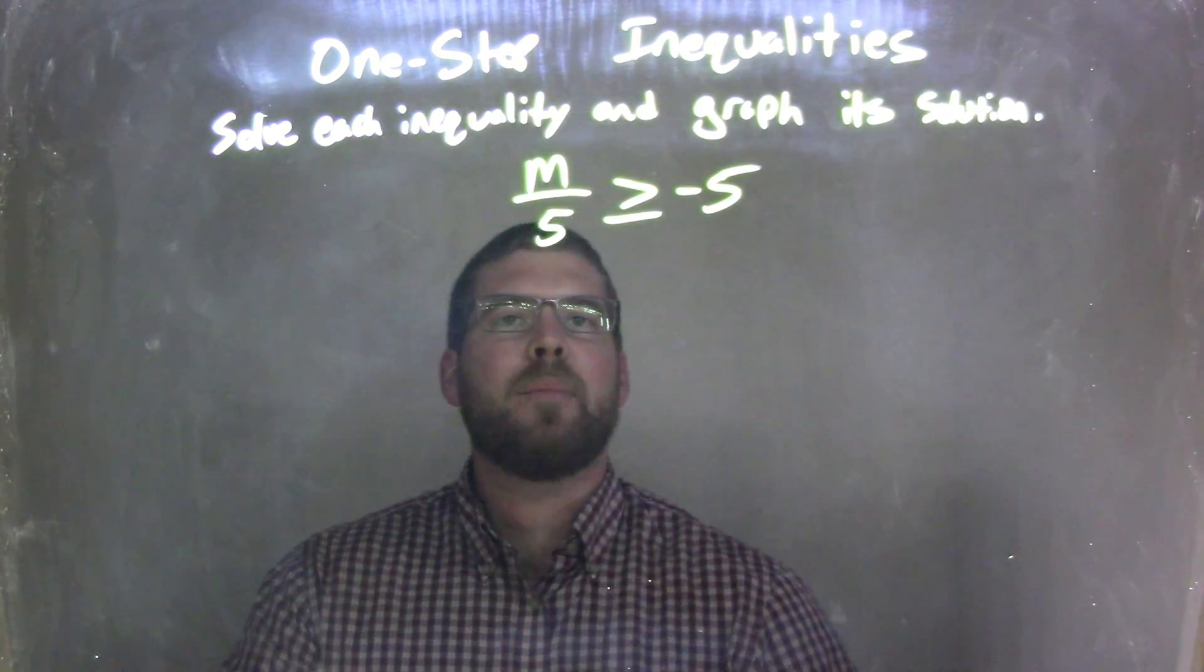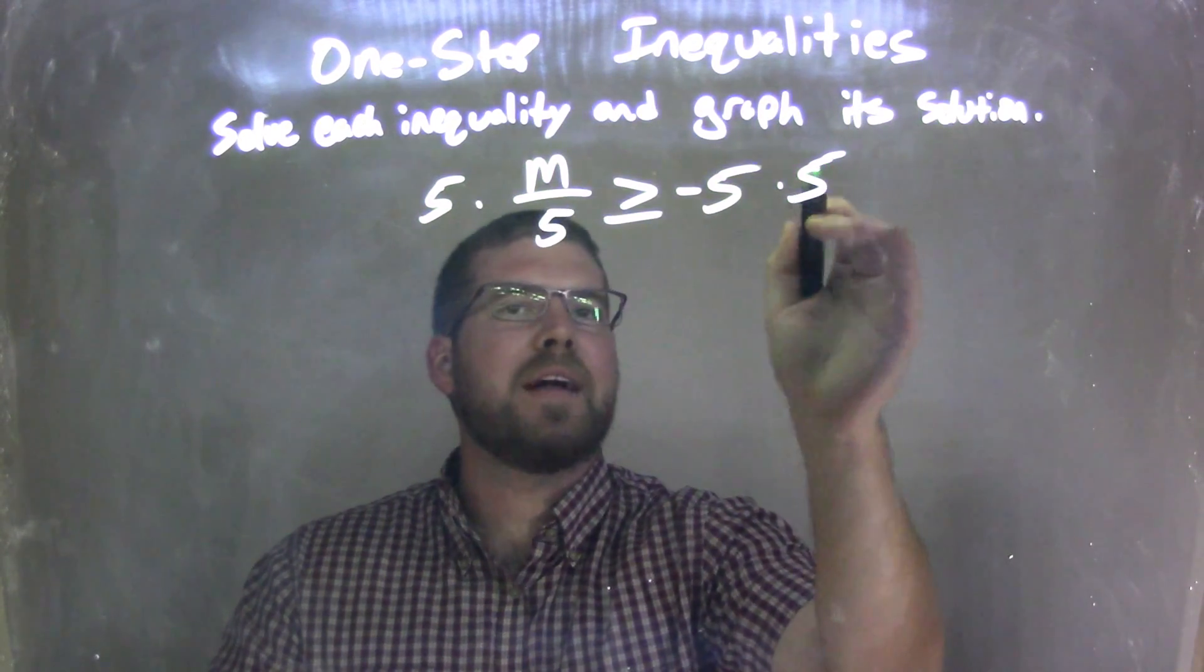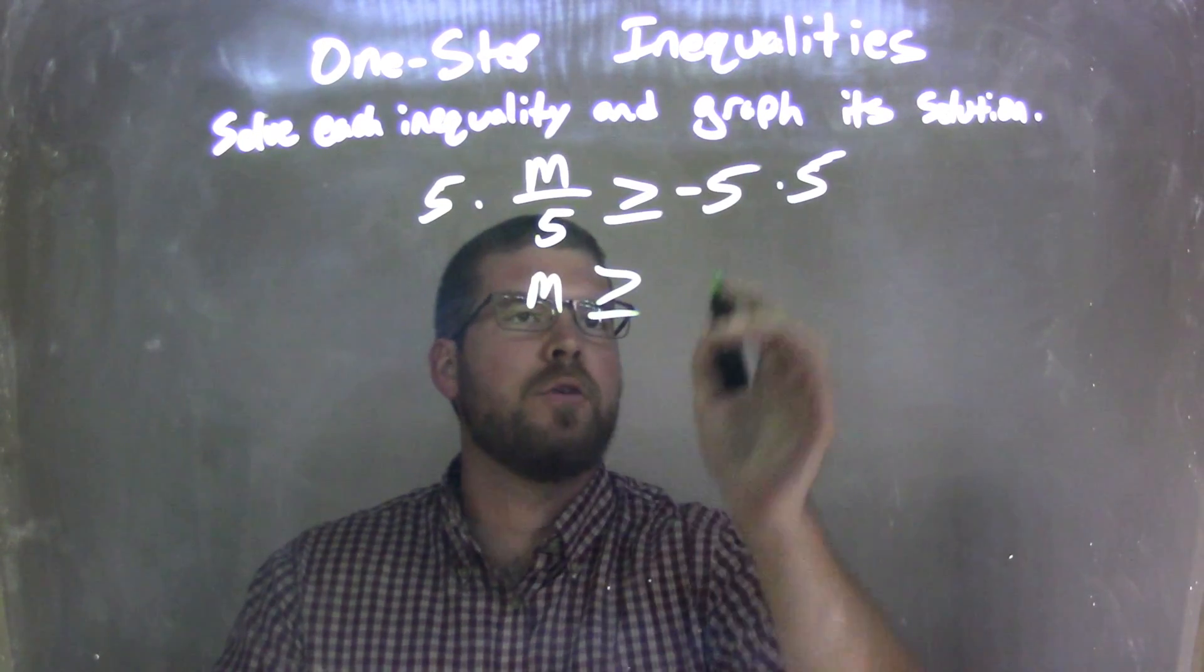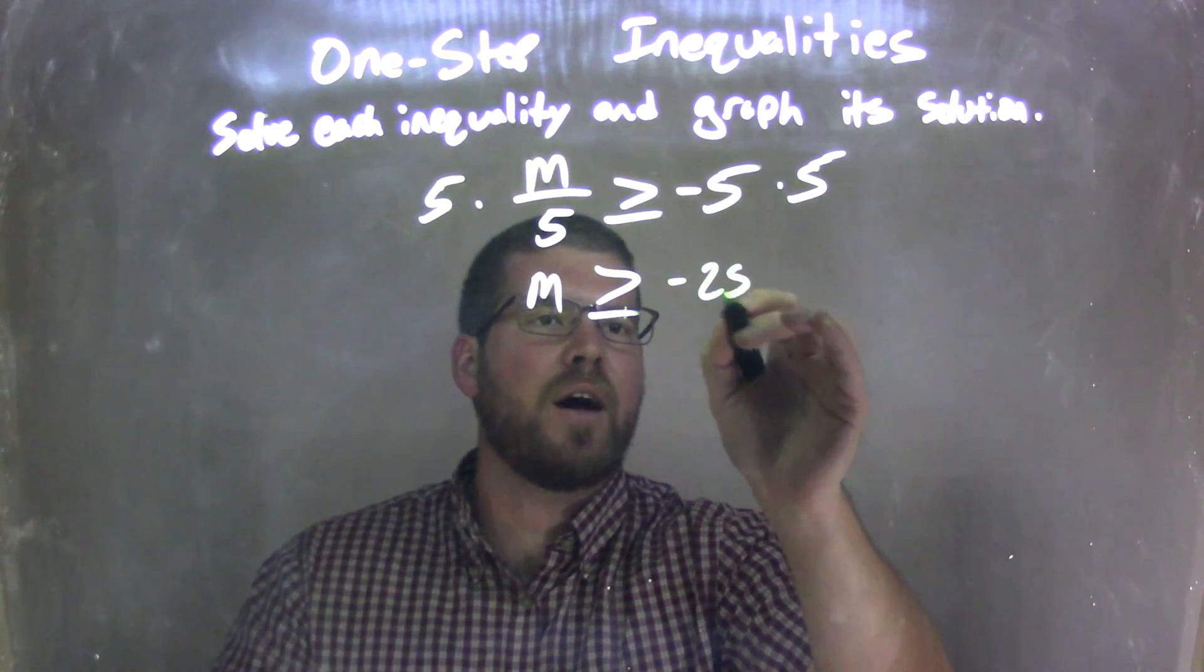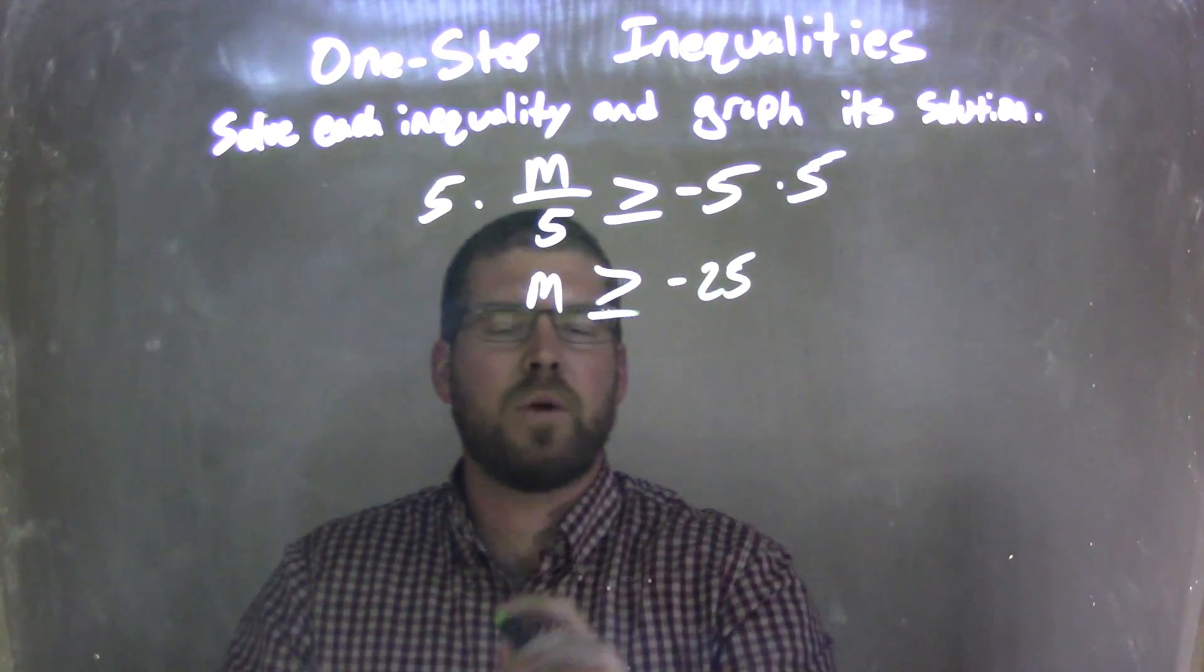My first step here is I need to isolate m, so I'm going to multiply both sides by 5. What that does is it's leaving the m by itself and says it's greater than or equal to, well 5 times negative 5, or negative 5 times 5, is negative 25. So what that tells us here is that m is already isolated, is greater than or equal to negative 25.